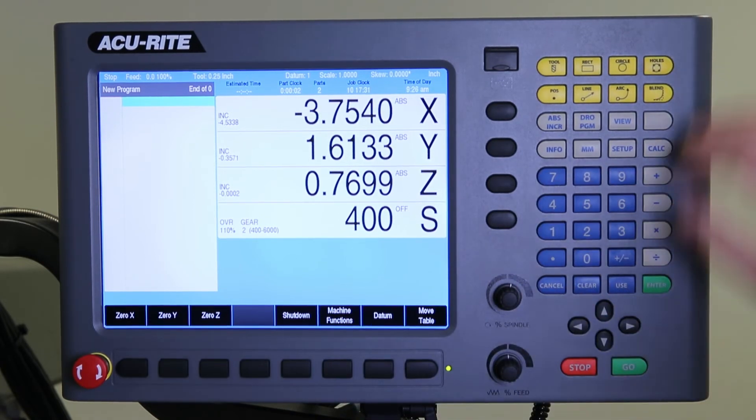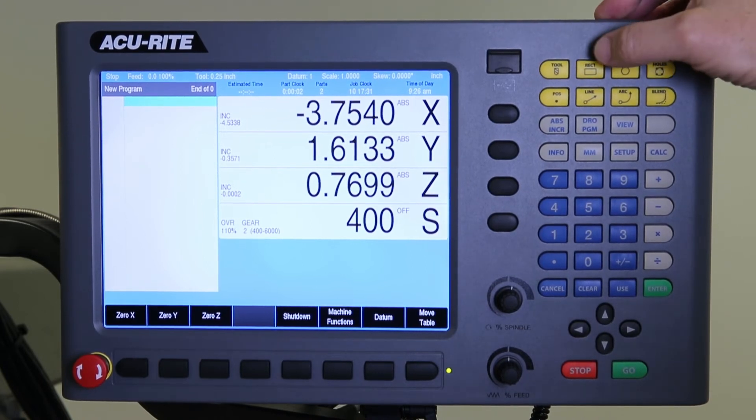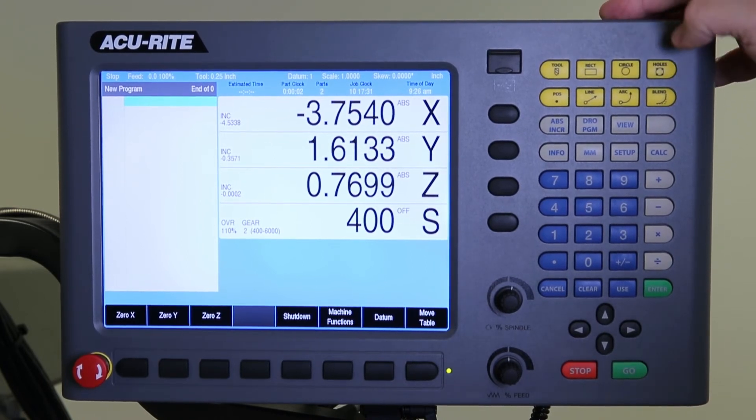As far as the keypad goes, these yellow keys here are what we call the CAN cycles. So your tools, rectangular milling, circular, holes, positions, lines, arcs, and blends.